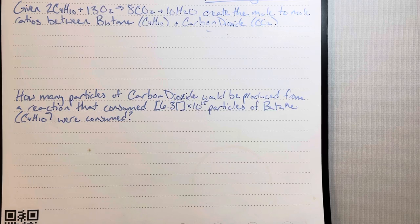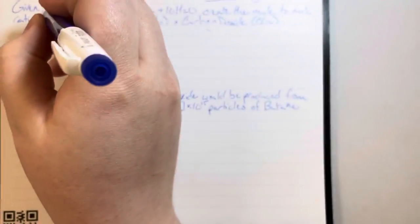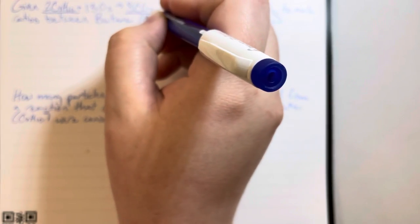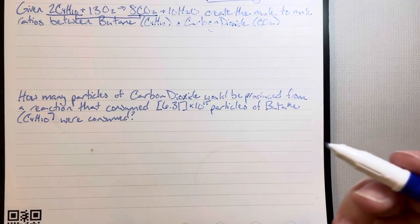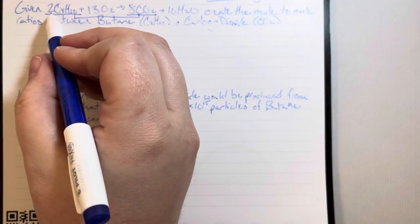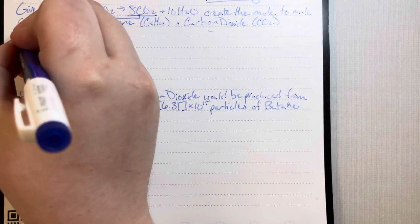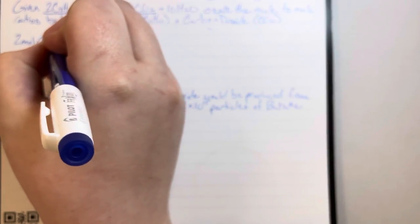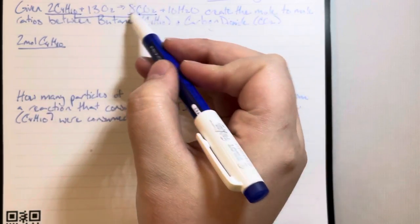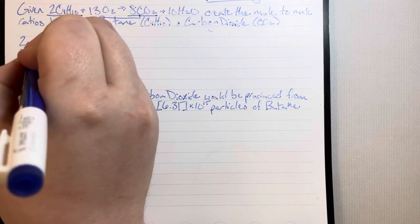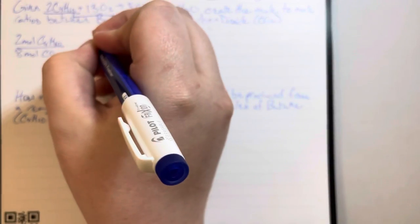Given the combustion of butane, create the mole ratio between butane C4H10 and carbon dioxide CO2. I'll identify the two compounds that were mentioned and visually connect them. To create the mole ratios, I'll take the coefficient in front of butane, which is 2: 2 moles of butane for every 8 moles of carbon dioxide. And I'll flip that.